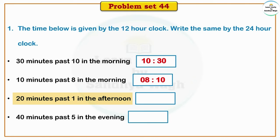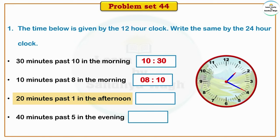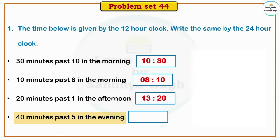Next is 20 minutes past 1 in the afternoon. In the 12-hour clock this is shown as 1:20 PM. Now in the 24-hour clock, we know that after 12 noon, time is not measured as 1, 2, 3 again. After 12 noon in the 24-hour clock, 1 o'clock becomes 13. So we write 13.20 — that is, 20 minutes past 13.